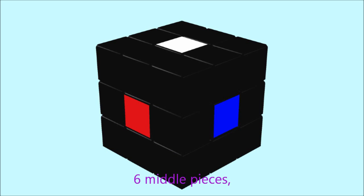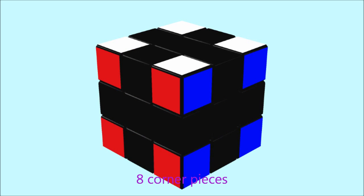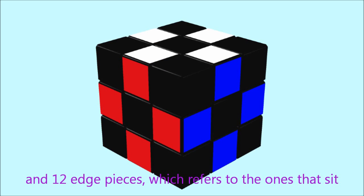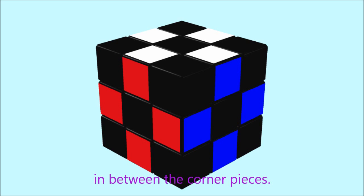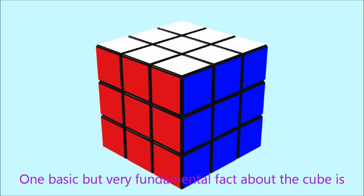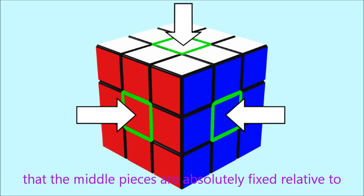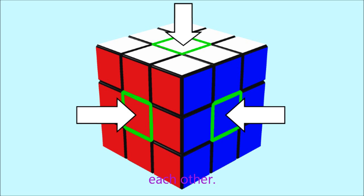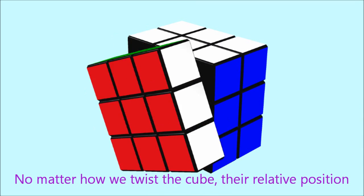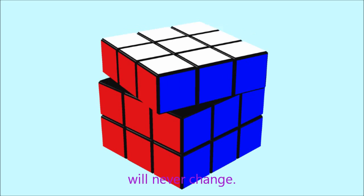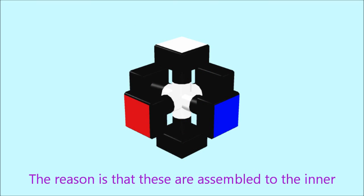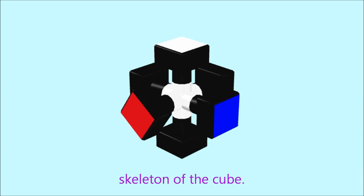6 middle pieces, 8 corner pieces, and 12 edge pieces, which refers to the ones that sit in between the corner pieces. One basic but very fundamental fact about the cube is that the middle pieces are absolutely fixed relative to each other. No matter how we twist the cube, their relative position will never change. The reason is that these are assembled to the inner skeleton of the cube.